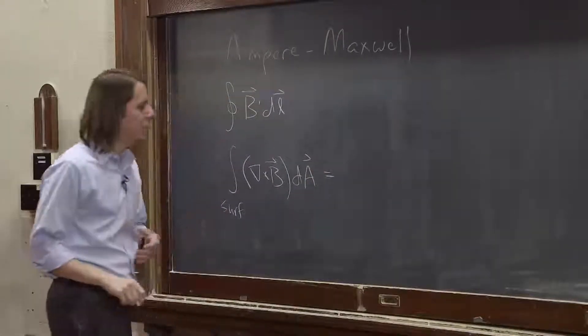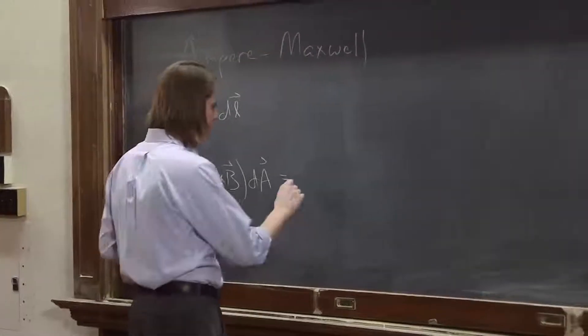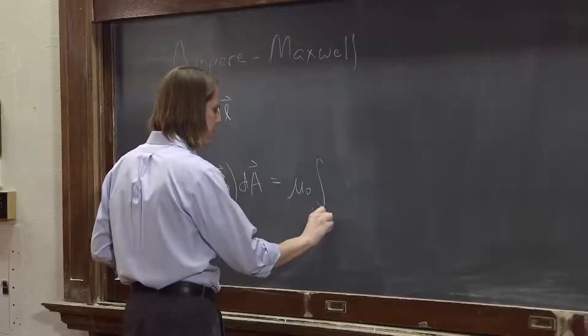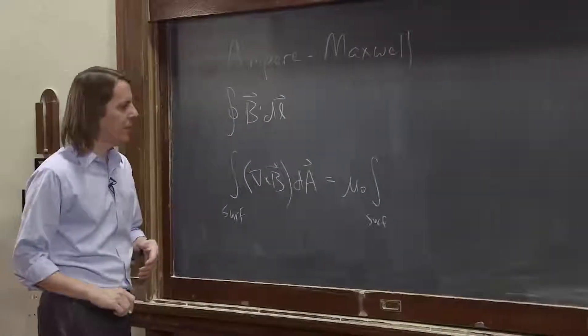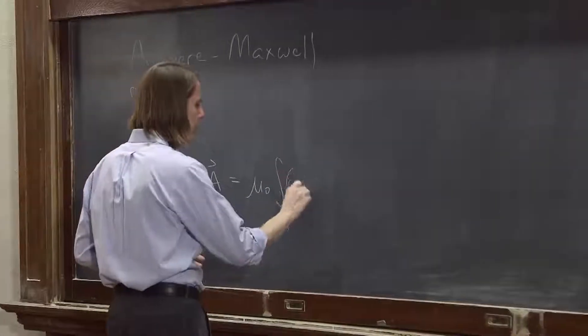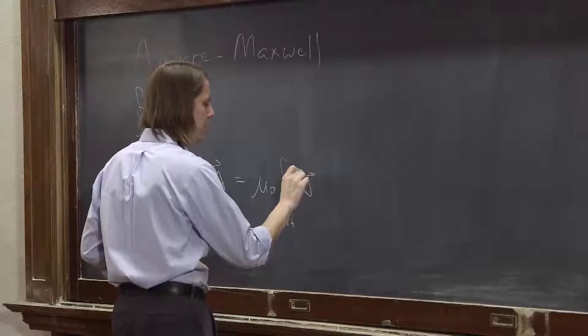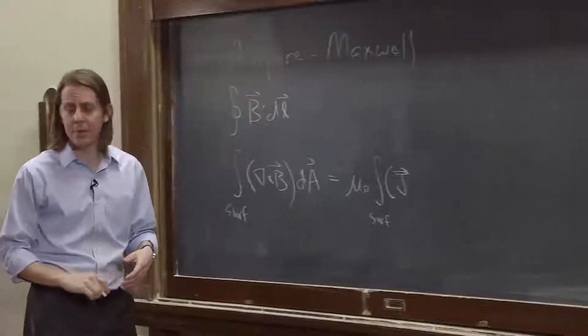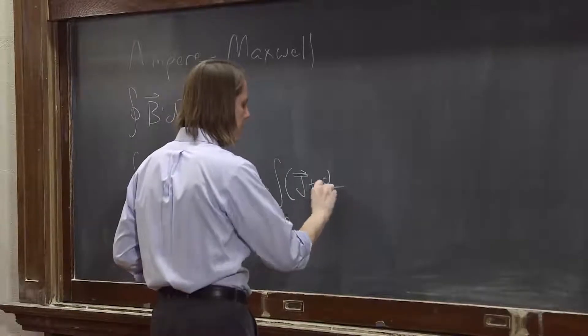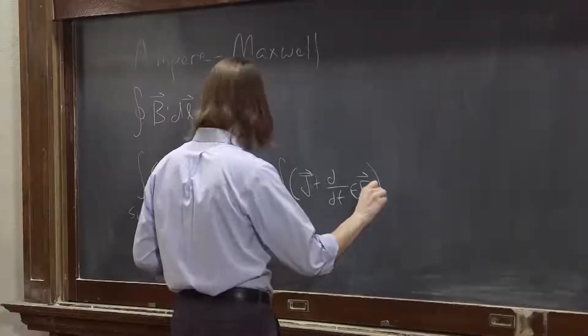And then we can just keep the right-hand side of the Ampere-Maxwell law. It was mu-naught times the integral also over a surface. And we had the normal current, which we describe with a current density J, plus we had Maxwell's displacement term, d/dt epsilon naught E dA.